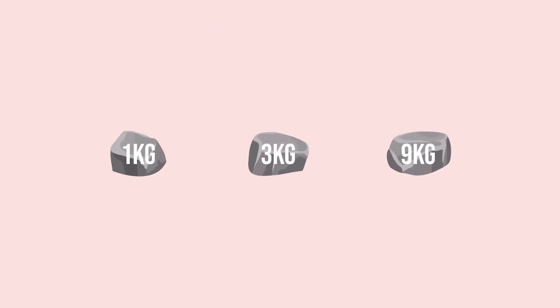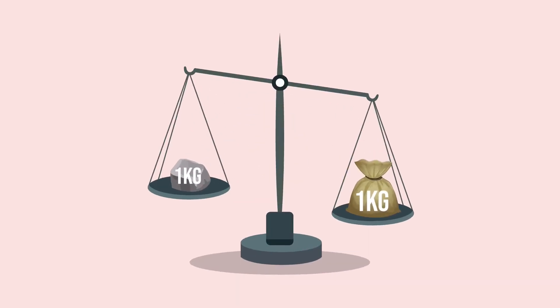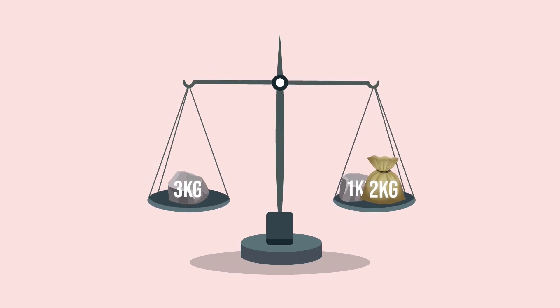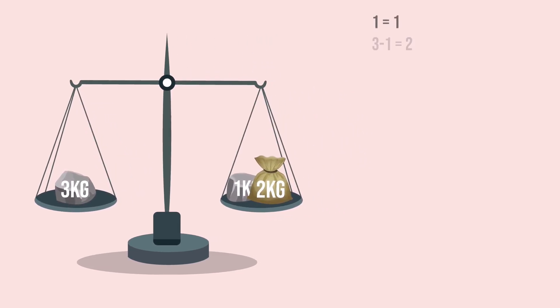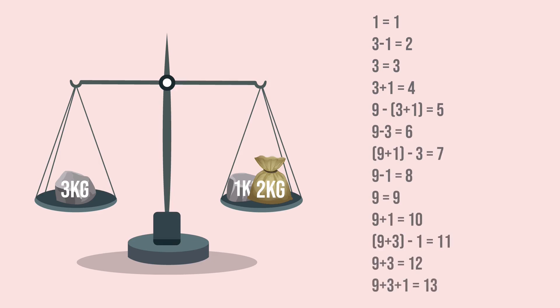Now with these three blocks we can measure all the weights. I will show you how. With just 1 kilogram block you can measure 1 kilogram of vegetables. By placing a 3 kilogram block on the left and 1 kilogram block on right, you can measure 2 kilogram vegetables. And the list goes on. As you can see, with these three weights we can measure all the weights till 13 kilograms, and that solves the question.